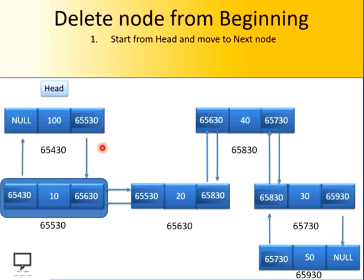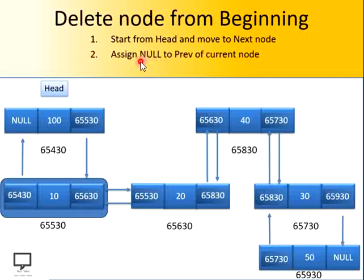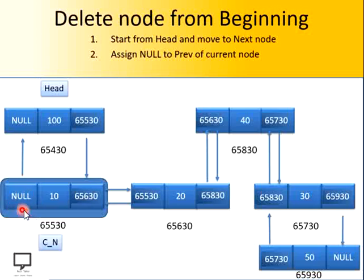Now, after deletion of this node, we are going to make this node the head node. That's why we only need to traverse to the second node of the doubly linked list. What we have to do is update the links in this doubly linked list to delete the first node. For that, we have to assign a null pointer to the previous field of this current node. Wherever we are at this current node, we are supposed to update this previous field.